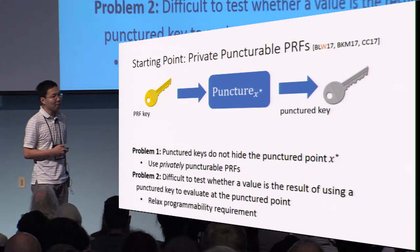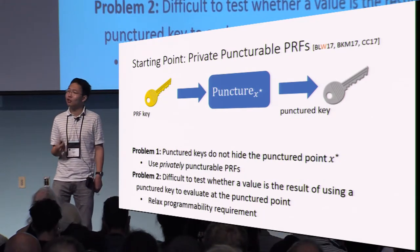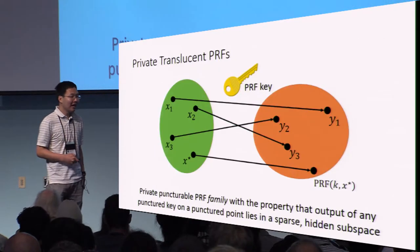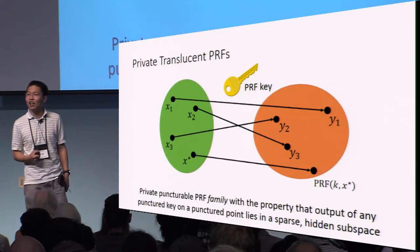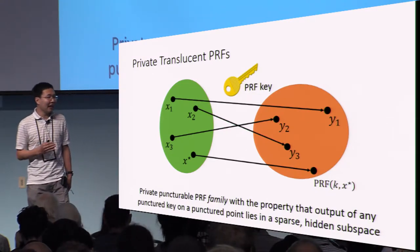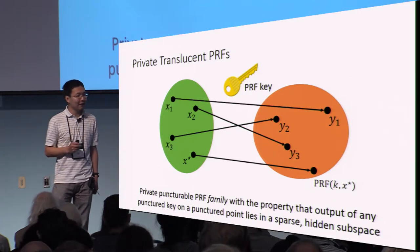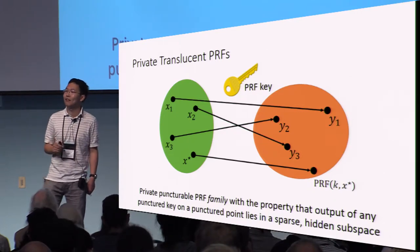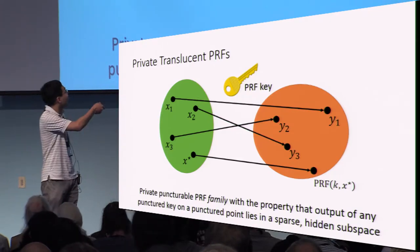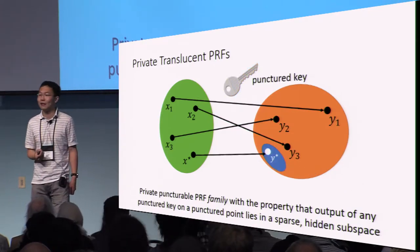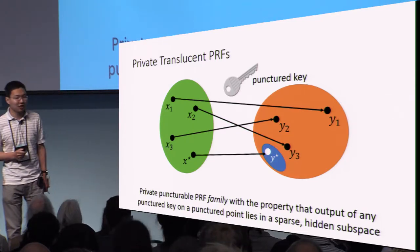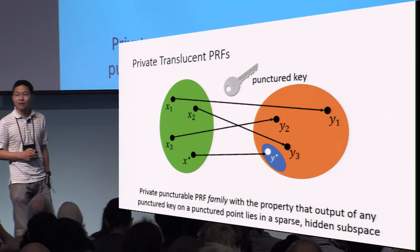To get around this problem, we relax the programmability requirement and introduce a new cryptographic primitive to enable watermarking. The new cryptographic primitive we introduce in this work is a notion called a private translucent PRF. At a very high level, a private translucent PRF is first and foremost a private puncturable PRF, but it has a special property that in the range of the PRF there's a special hidden subspace. And it has the property that whenever you take a punctured key and evaluate at the punctured point, you're going to always land inside this hidden subspace.